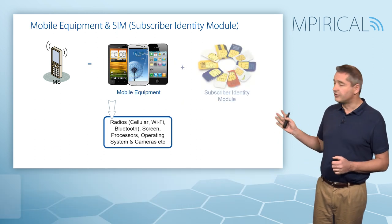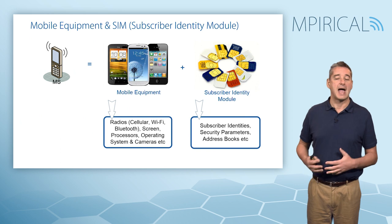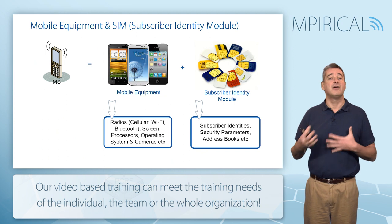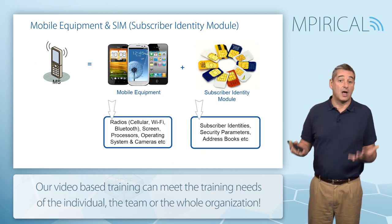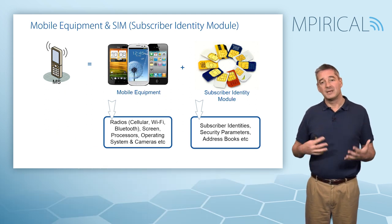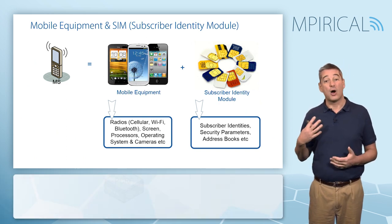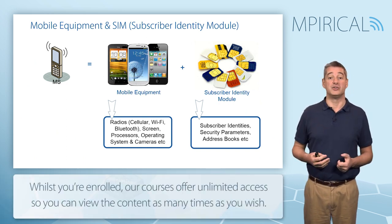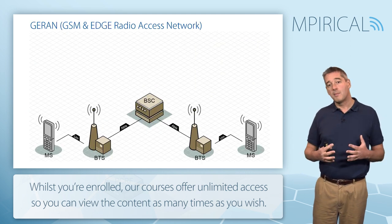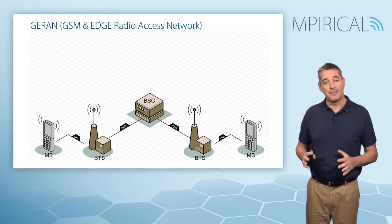The second element of the mobile station is the SIM card, or Subscriber Identity Module, and it's this which makes the phone yours. It contains security parameters, various subscriber identities, and also personal information such as address books. In the future it may also include credit card information or e-tickets.